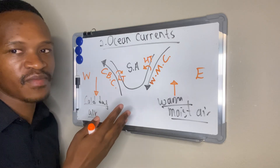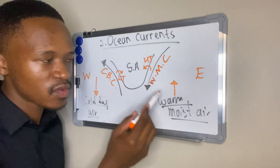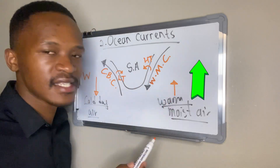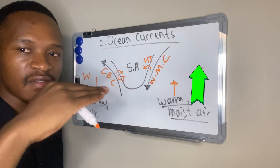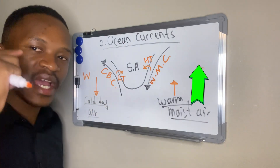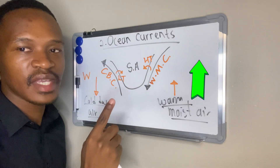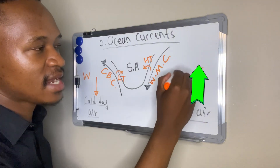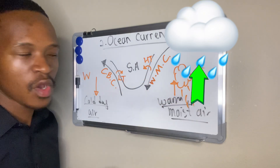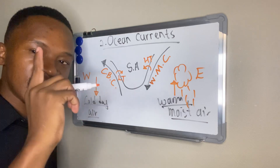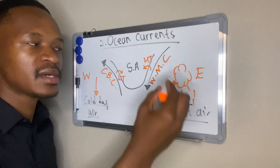I also want to mention rainfall. The warm Mozambique current brings warm, moist air, and warm moist air rises. In the troposphere — the layer closest to the earth's surface — temperature decreases with altitude. This warm, moist air will cool as it rises, condense, and form clouds. Clouds bring about more rainfall on the east coast.